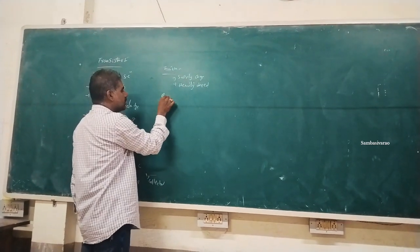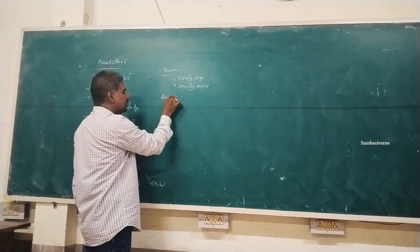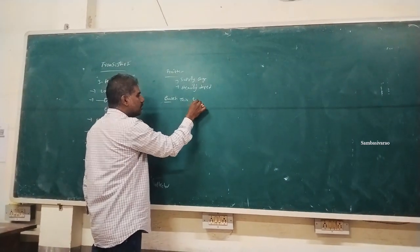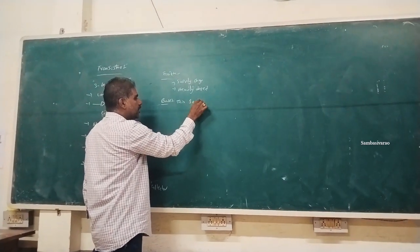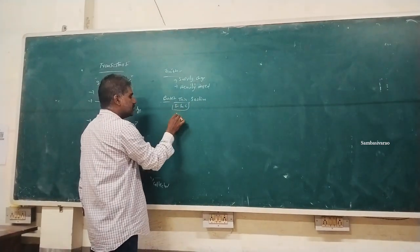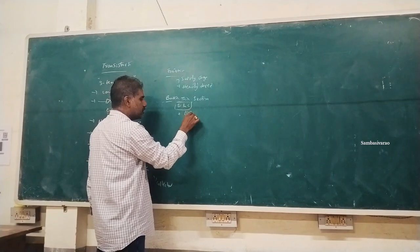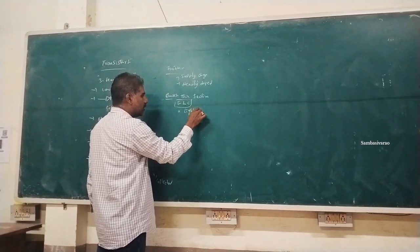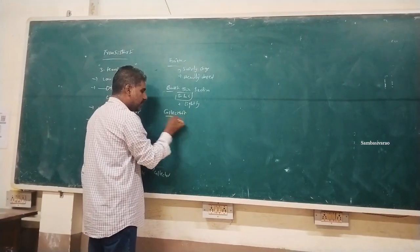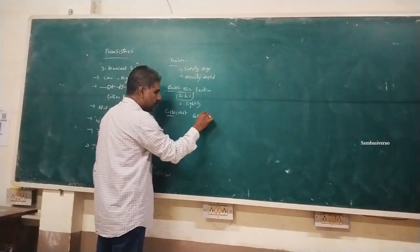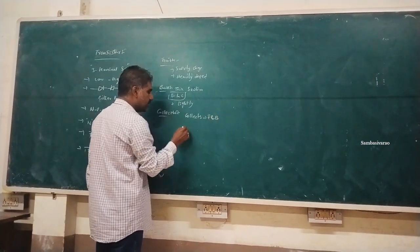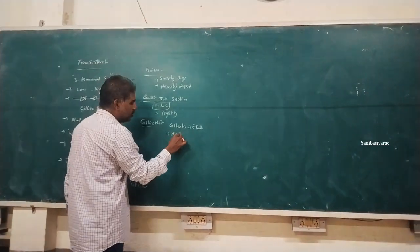The base is a thin, narrow section located in between the emitter and collector. It is lightly doped. The collector is used to collect the charge carriers coming from the emitter region. It is moderately doped.